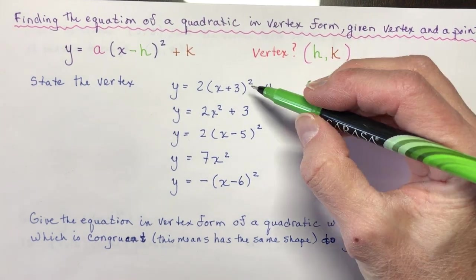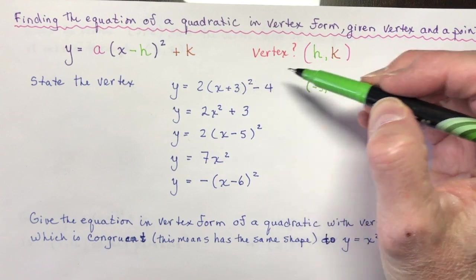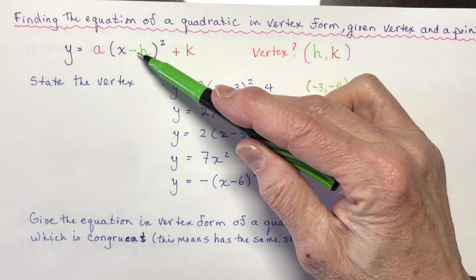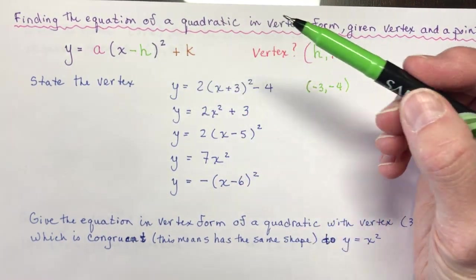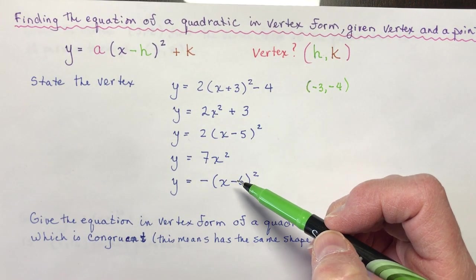Okay, so this one, the vertex would be minus 3 and minus 4. It's right there. Don't forget, x's are weird. When you pull that one out from the bracket here, you have to change the sign because the equation has a minus h in it. Okay, so for this equation here, what is the vertex?